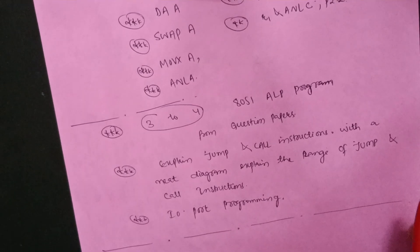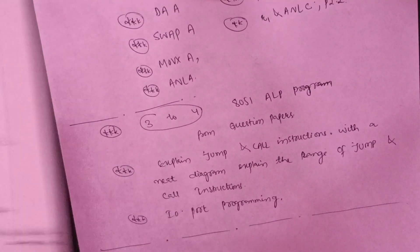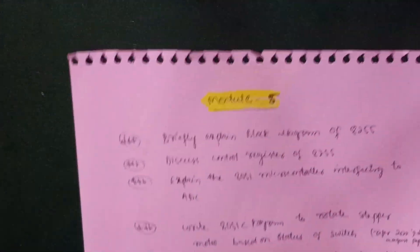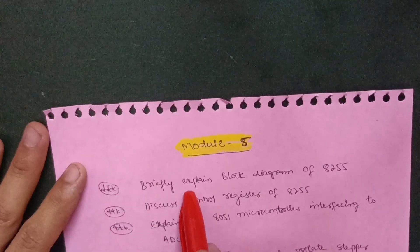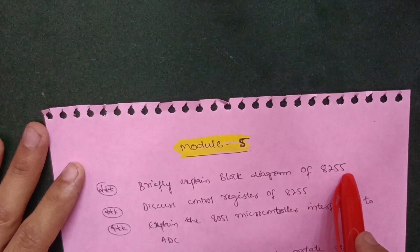Then we will proceed with Module 5 which is the passing module. In this you have to focus on briefly explain block diagram of 8255 controller and discuss control register of 8255.